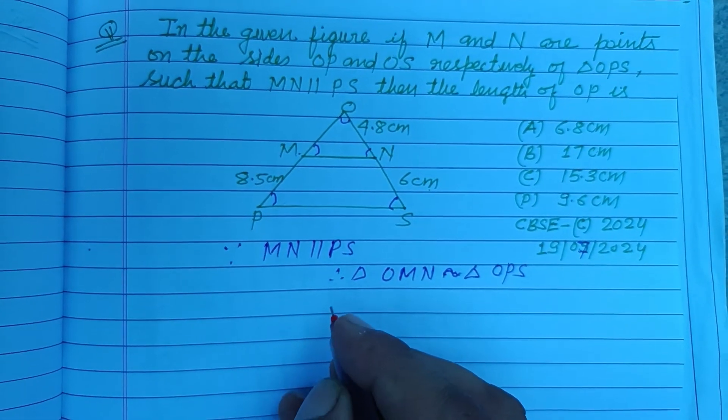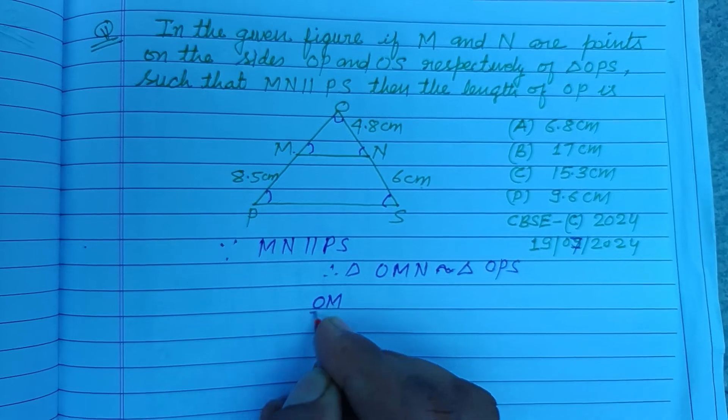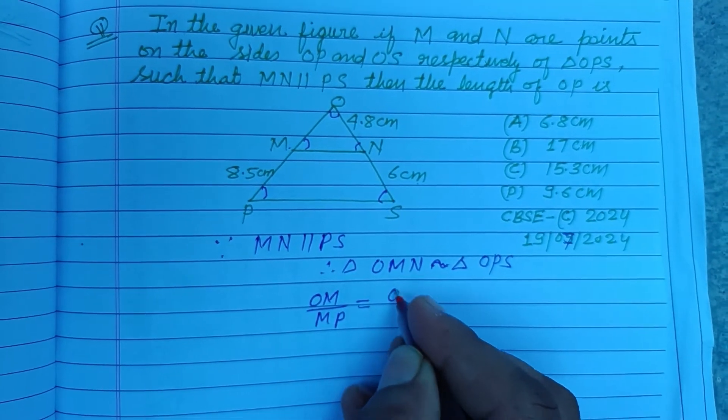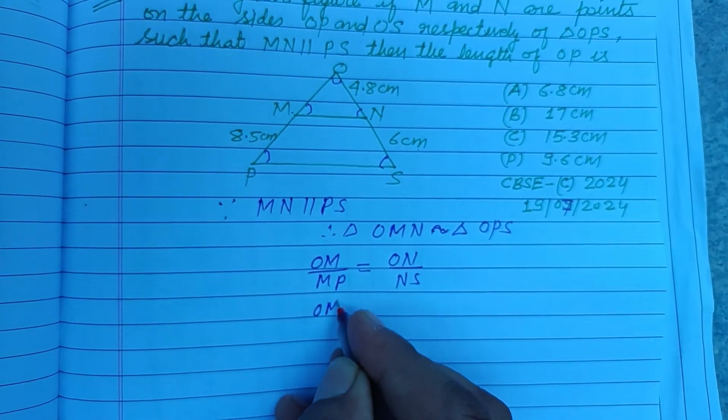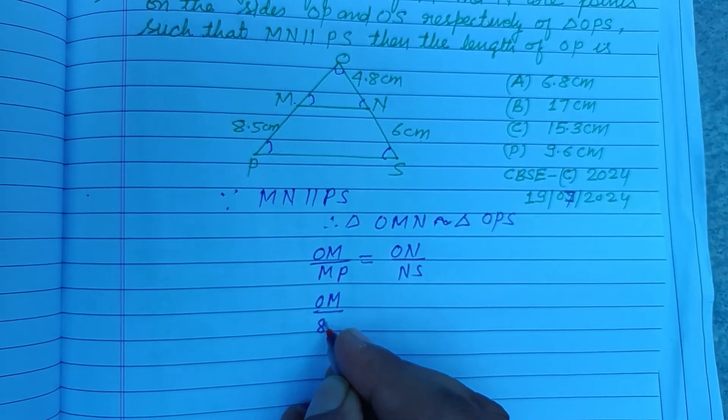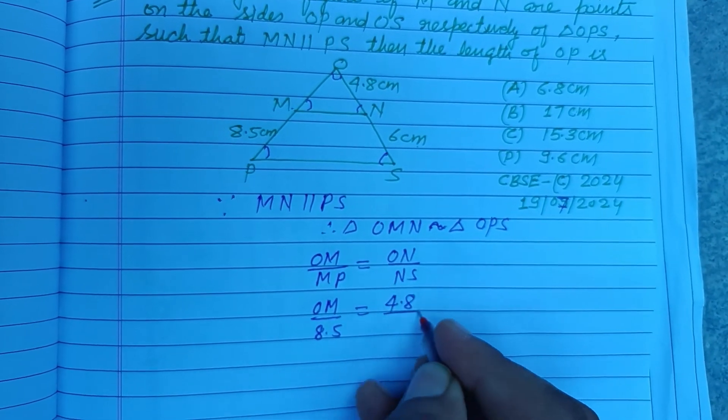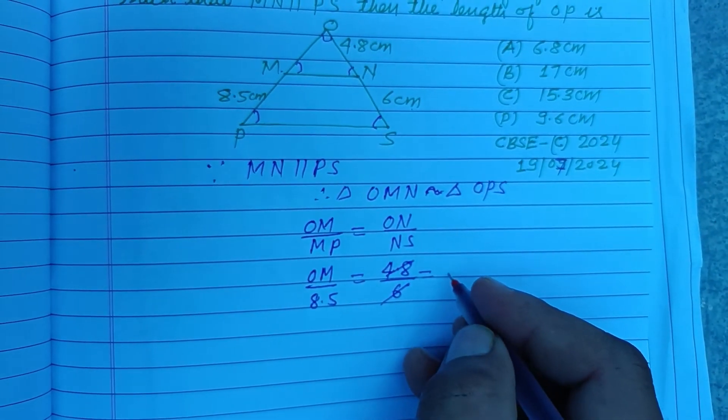Now the ratio of the sides: OM over MP equals ON upon NS. OM upon MP is 8.5, and we have 4.8 and 6. So this is 0.8.